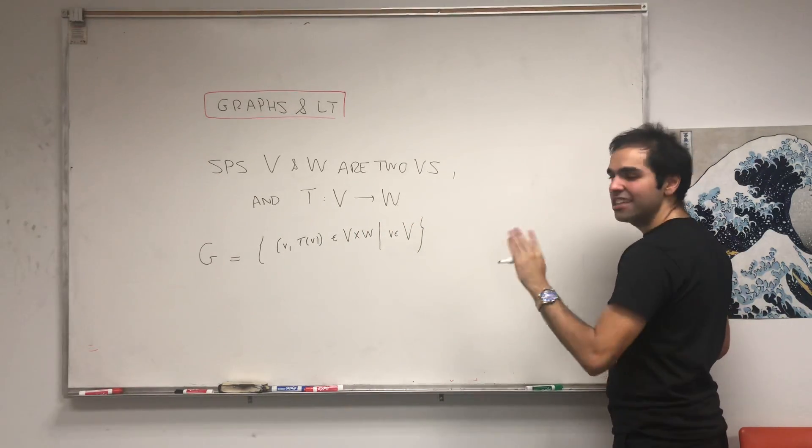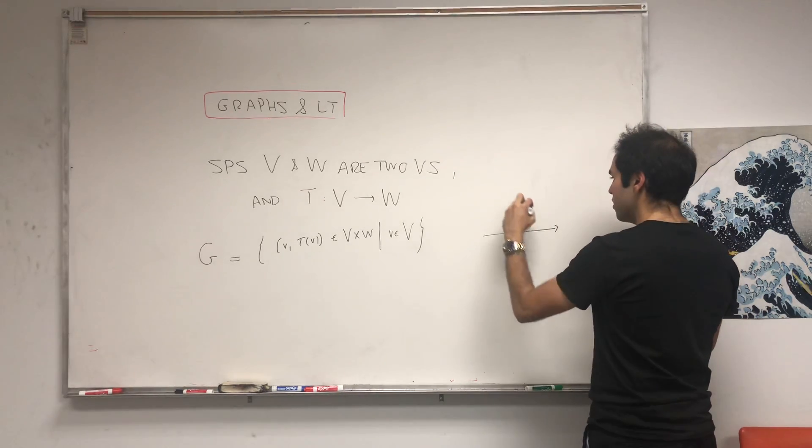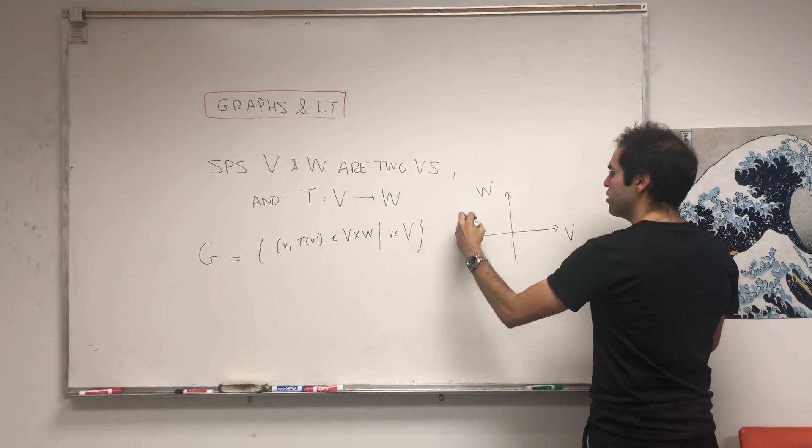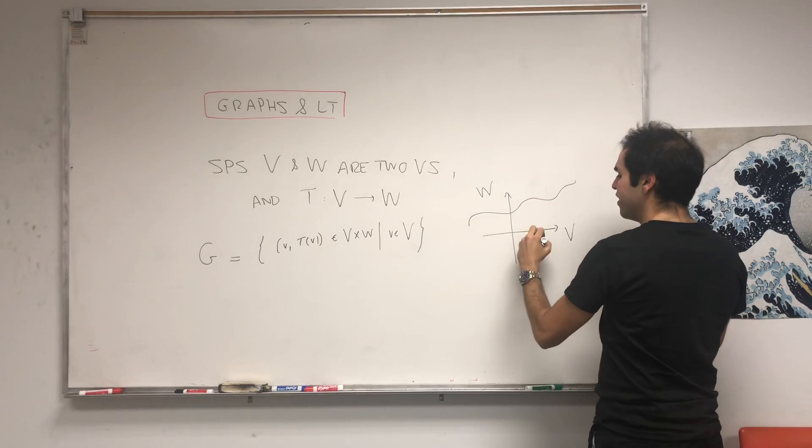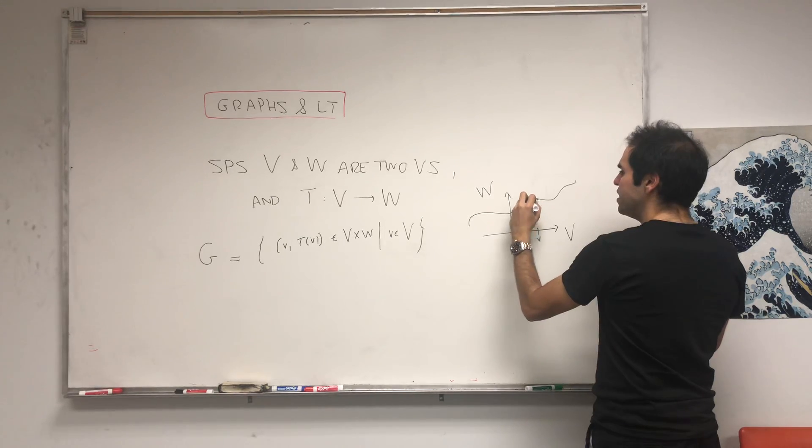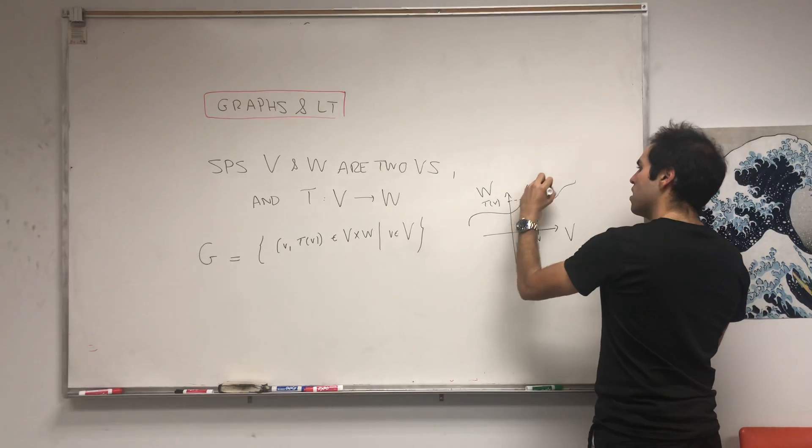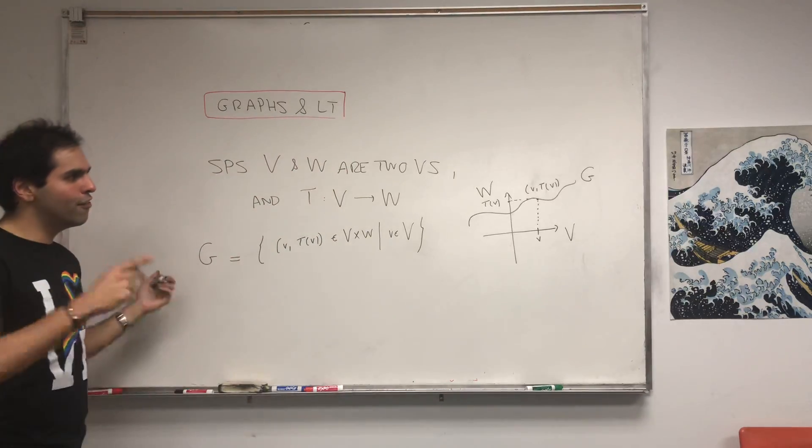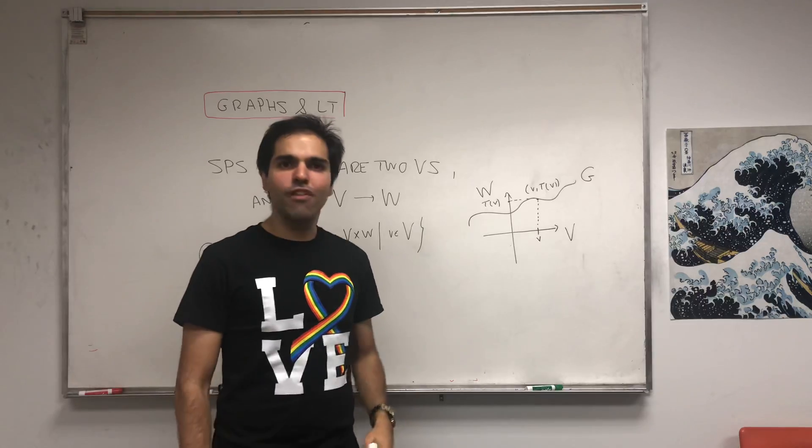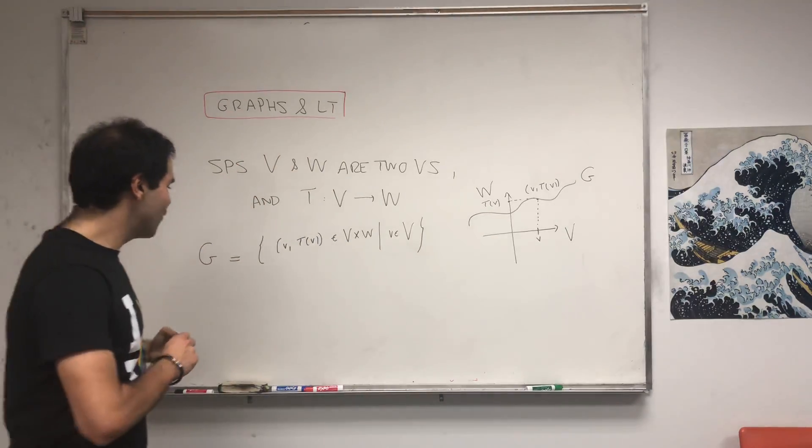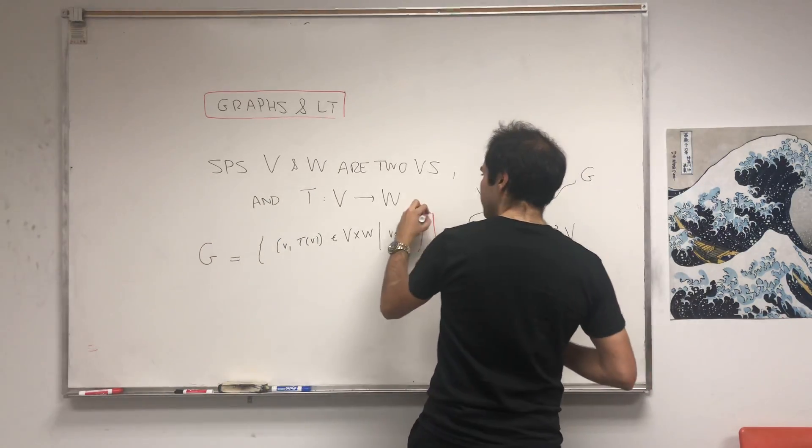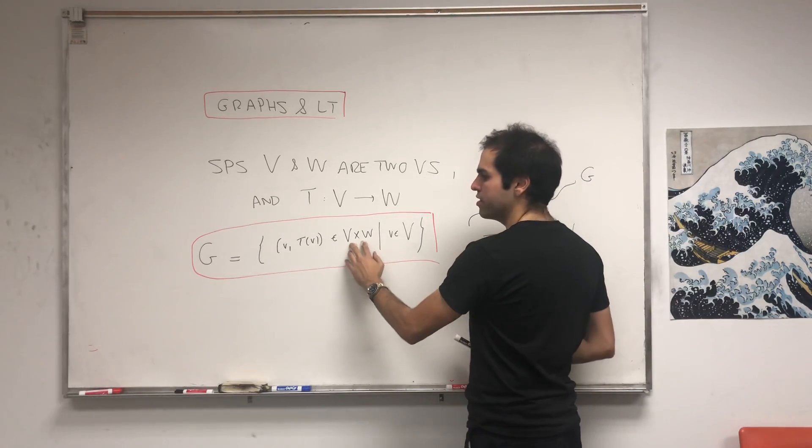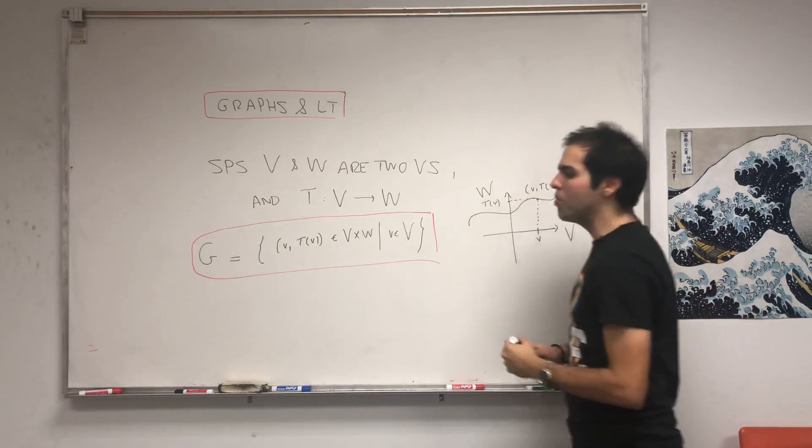The reason it's called G is because it's precisely the graph of this function. Think of V and W as your two axes. Then the set of points of the form (v, T(v)) is precisely the graph of T. Just like the graph of a function is the set of points (x, f(x)) where x goes through your domain. Of course, it's a subset of V × W because V × W is just a set of points where the first component is in V and the other component is in W.